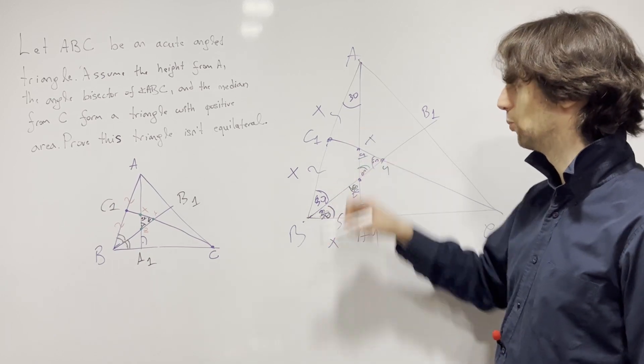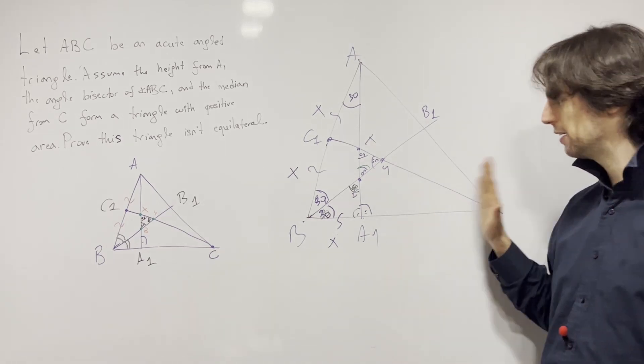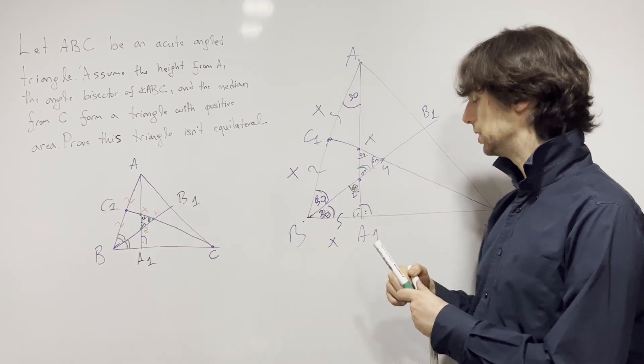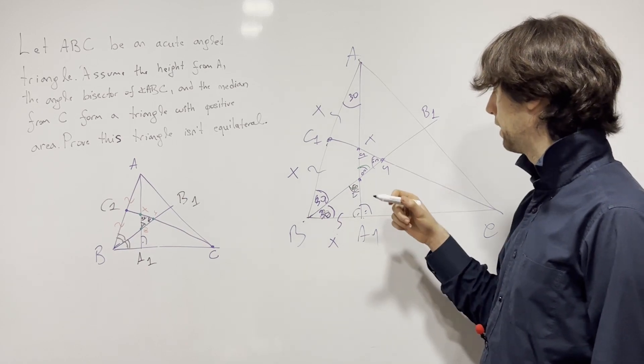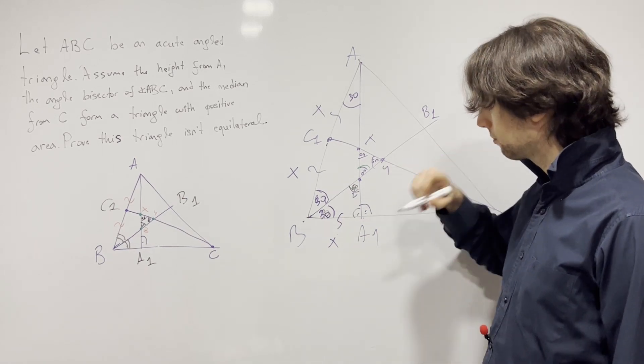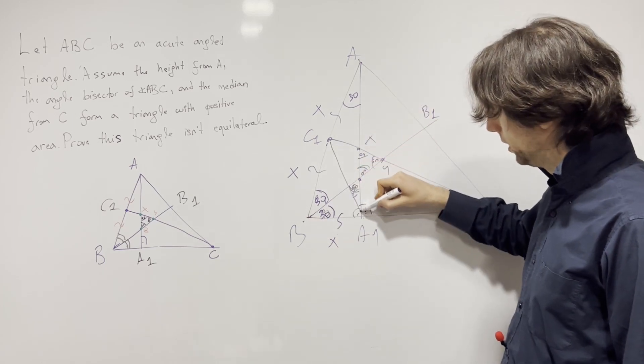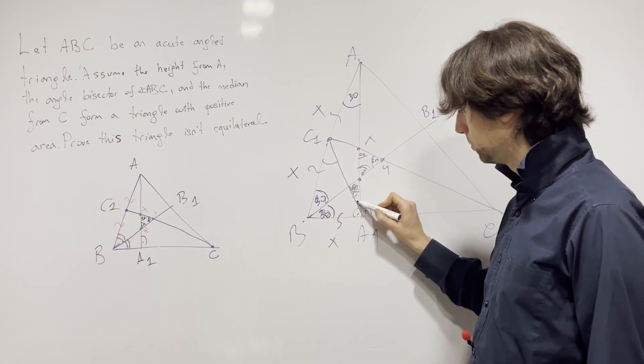Now what does that mean for us? I invite you again, pause for five minutes and try to push the problem further. And the answer is well what this means really is that now given we have BA1, BA1 is BC1, I have if I connect these two I'll have this angle is equal to this angle.